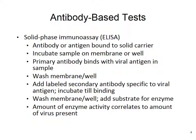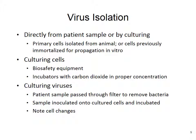With antibody-based tests like ELISA, an antibody or antigen is bound to a solid carrier. A sample is incubated on the membrane or in the well, allowing primary antibody to bind with viral antigen. We wash, add a labeled secondary antibody, incubate, wash again, and add substrate for the enzyme. The amount of enzyme activity correlates to the amount of virus present, usually seen as a color change.